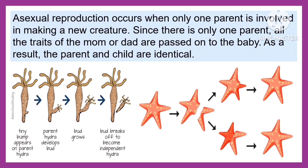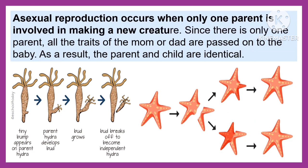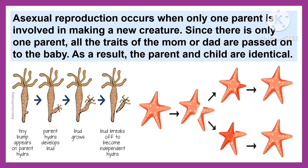Asexual reproduction occurs when only one parent is involved in making a new creature. Since there is only one parent, all the traits of the mom or dad are passed on to the baby. As a result, the parent and child are identical.